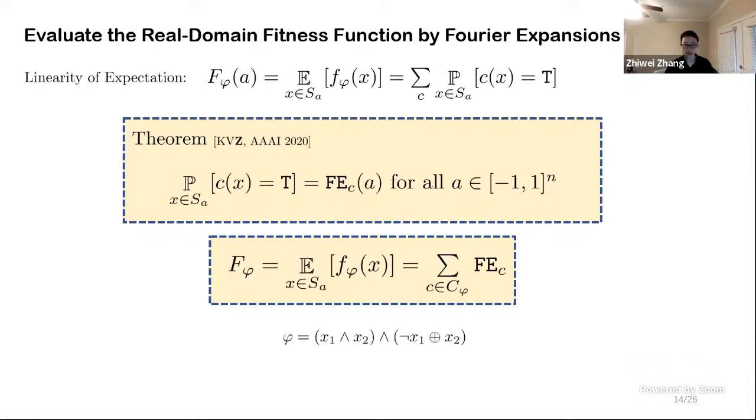So now we are able to rewrite our fitness function by the sum of Fourier expansions of each constraint. Here is an example. Now phi has two different constraints and we can transform them both into their corresponding Fourier polynomials and add them up to get our polynomial representation of fitness function so we will be able to evaluate it.